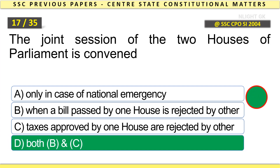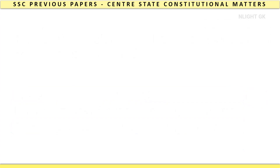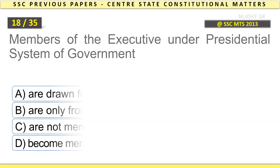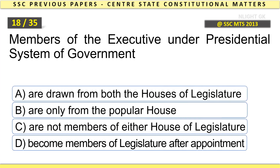The Joint Session of the Two Houses of Parliament is convened — both Two and Three. Members of the Executive under Presidential System of Government.